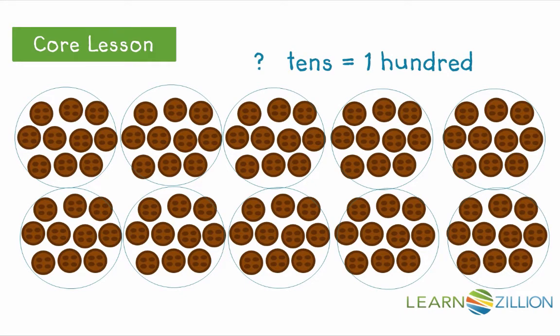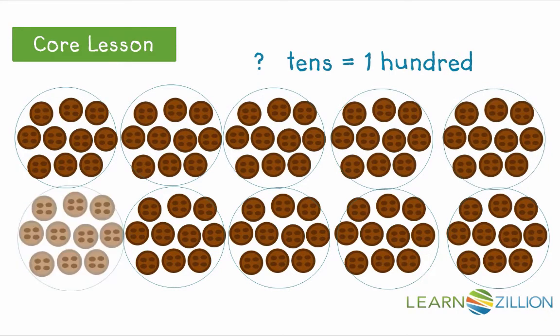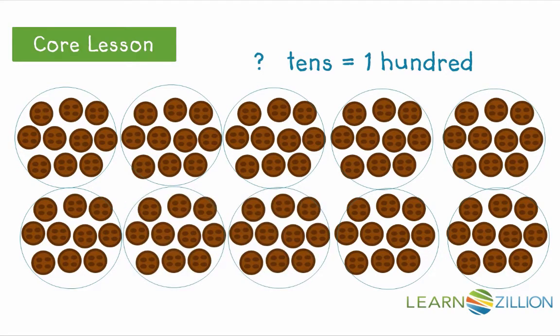I wonder how many groups of 10 equal 100. Let's count each group of 10 to find out. 1, 2, 3, 4, 5, 6, 7, 8, 9, 10. It takes 10 groups of 10 to equal 100.